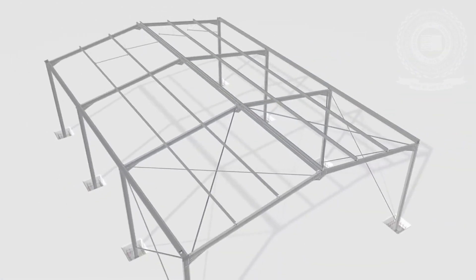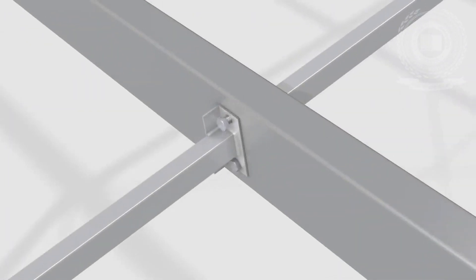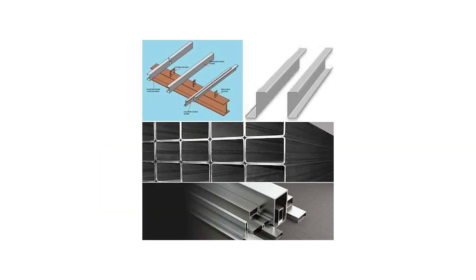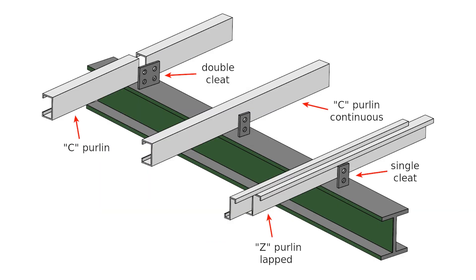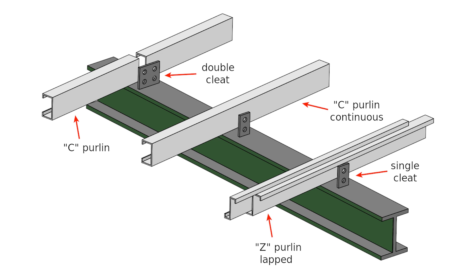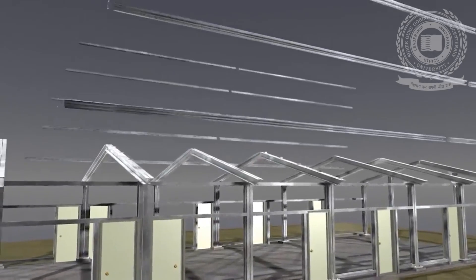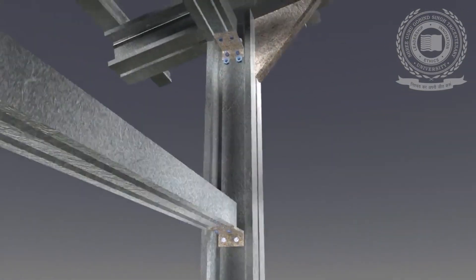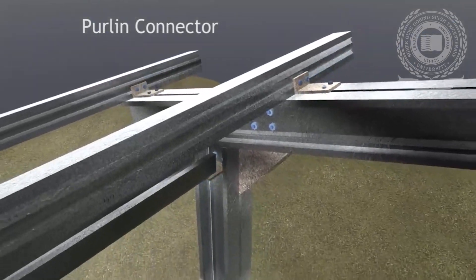In such cases, the top cord members will be subjected to bending movement in addition to axial load. Purlins may be angles, channels, eye sections or tube sections. A purlin is a horizontal beam or bar used for structural support in structures, most often below the roof. Purlins are supported either by the building's rafters or its walls, and are most commonly used in metal buildings.